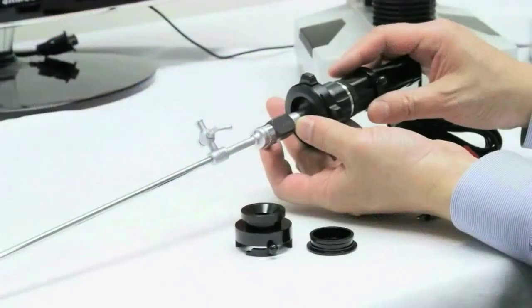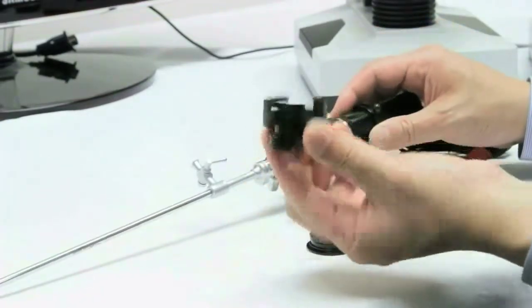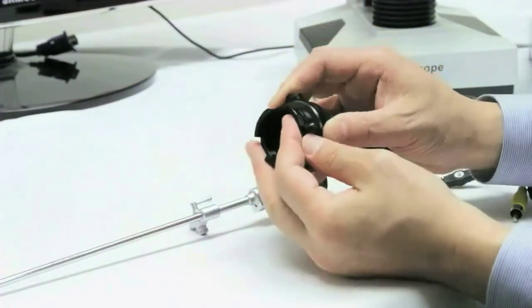To connect the flexible scope, we have an Olympus or Pentax adapter. Simply release the rigid scope, connect the Olympus or Pentax adapter, then connect to the flexible scope.